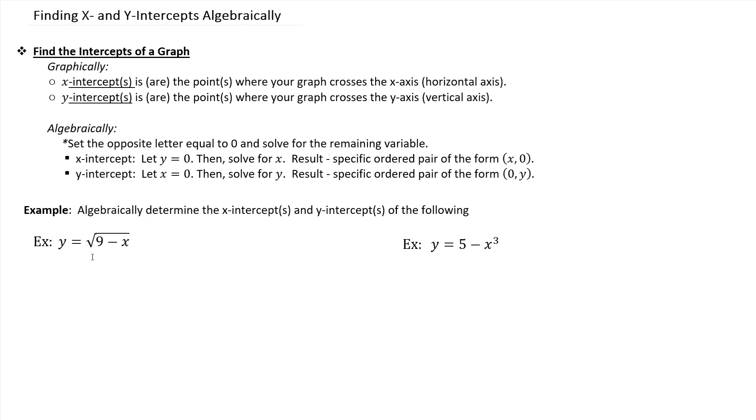I'm going to show an example of what that looks like. We'll start off with our example here with y equals the square root of 9 minus x. And we're going to look for the y-intercept first. So you start off by letting the opposite letter of the type of intercept that you're working with be 0. So in this case, we'll start off by letting x equal 0.